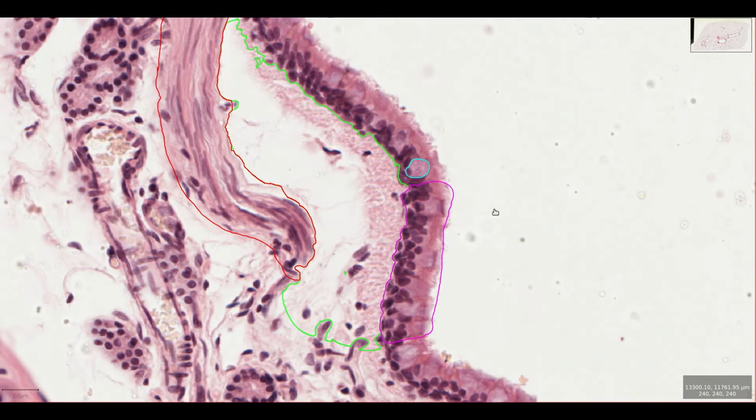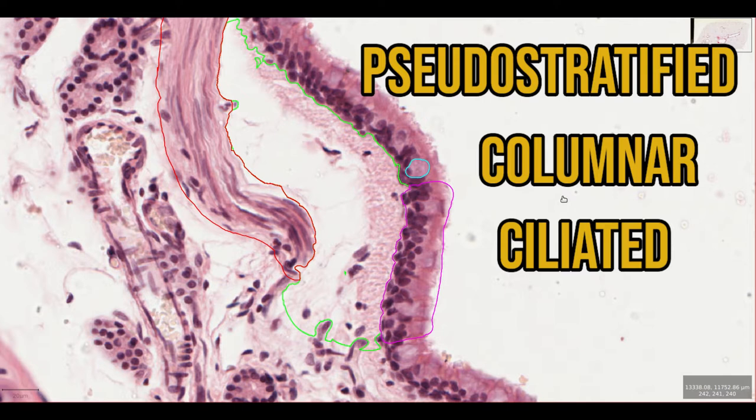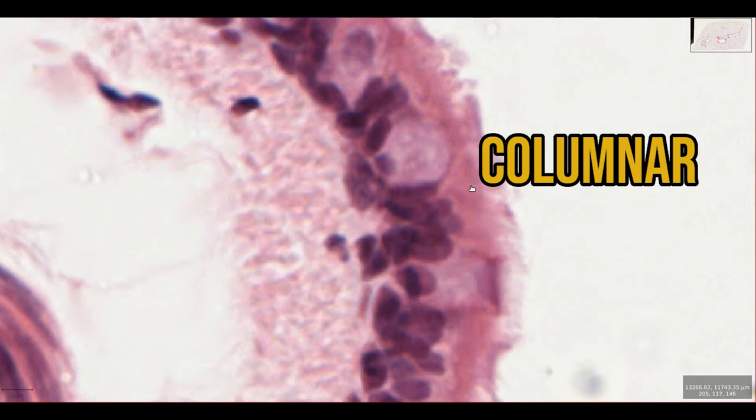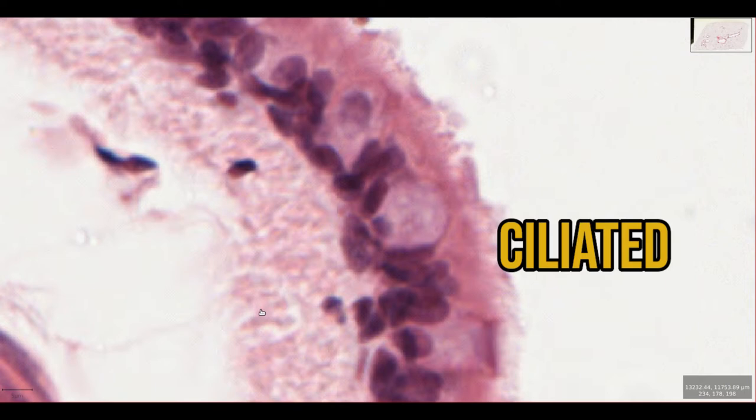The epithelium here is pseudostratified, columnar and ciliated. Pseudostratified refers to the fact that the nuclei of cells are at different heights and positions, giving the appearance that there are multiple layers of cells when in reality the epithelium is only one cell thick. Columnar refers to the shape of the cells — they're tall and elongated. And lastly, most of the cells are ciliated, and we can see the cilia as these tufty projections from the apical surface of the cell.